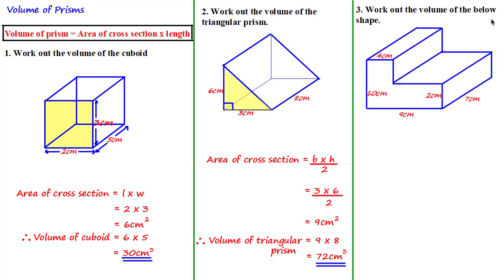Work out the volume of the compound prism below. This is called a compound prism — if we draw a dotted line, we can see it's made up of two cuboids joined together. We could work out the volume of each cuboid and add them together, but a quicker way is to find the area of the L-shaped cross-section and multiply it by the length of seven centimeters. To do this, we work out the area of both rectangles that make up the L-shape.